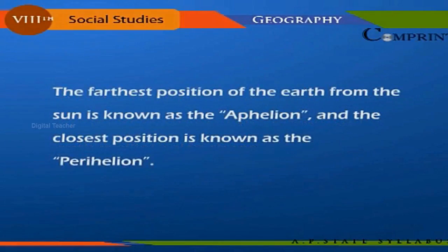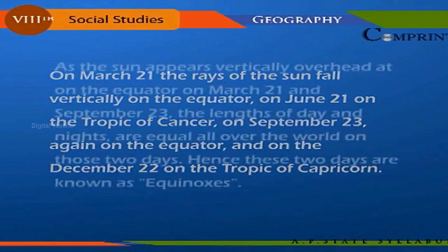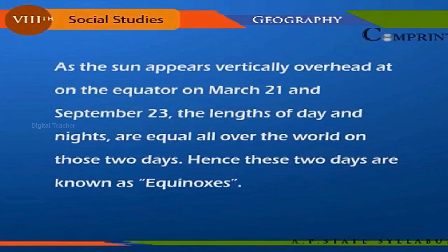The farthest position of the earth from the sun is known as aphelion, and the closest position is known as perihelion. On March 21st, the rays of the sun fall vertically on the equator; on June 21st, on the Tropic of Cancer; on September 23rd, again on the equator; and on December 22nd, on the Tropic of Capricorn.